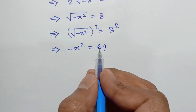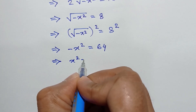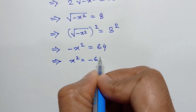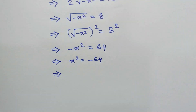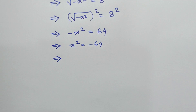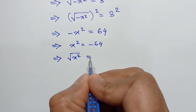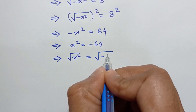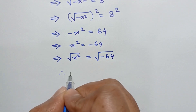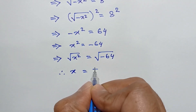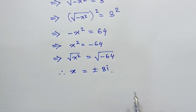Now multiplying both sides by negative 1, we will get x squared is equal to negative 64. If we take the square root of both sides, we will have square root of x squared is equal to square root of negative 64, so we get x is equal to plus or minus 8i, where i is an imaginary number.